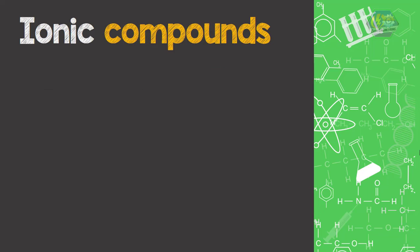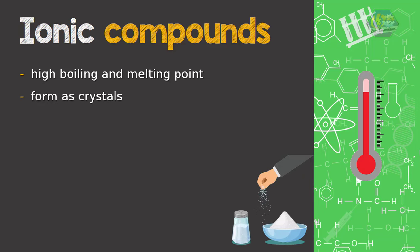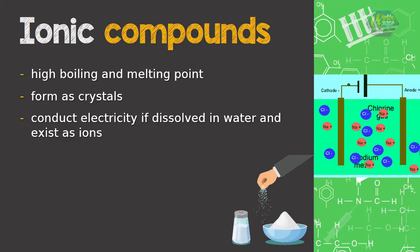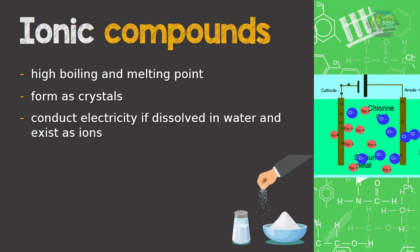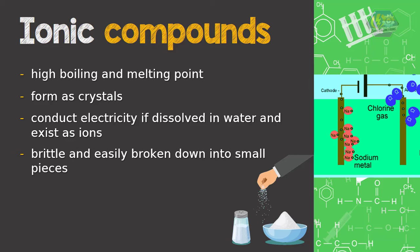Basically, ionic compounds have high boiling and melting points, and mostly they form as crystals. They can conduct electricity if they are dissolved in water and exist as ions. Lastly, they are brittle and easily broken down into small pieces.